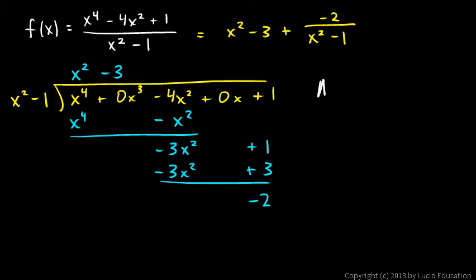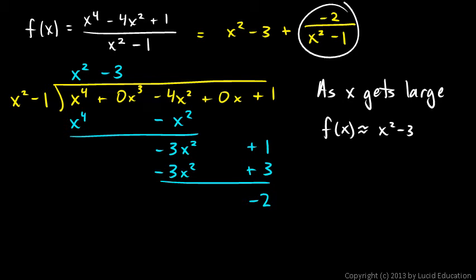Let me write that. As x gets large, f(x) will be approximately equal to x squared minus 3. And the bigger x gets, the more insignificant that term becomes and the closer the value of the function gets to that. So that is actually an asymptote.